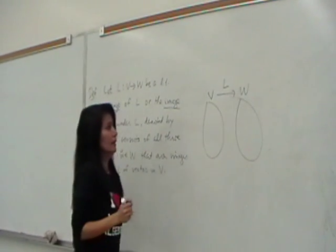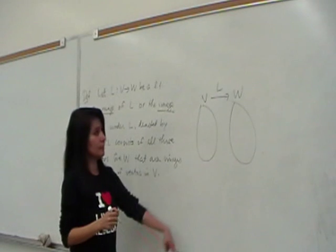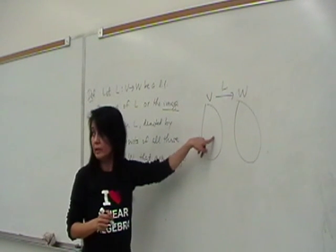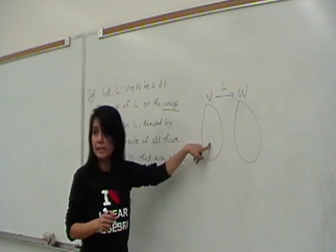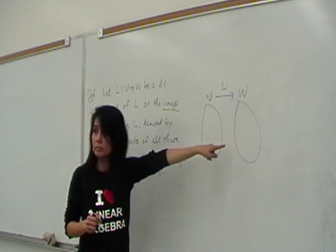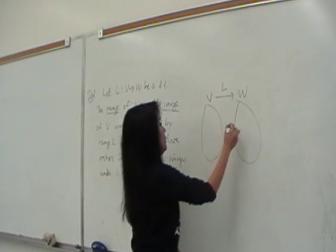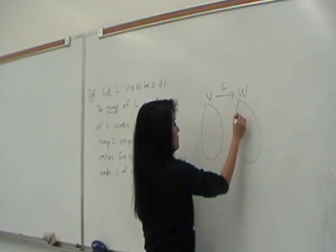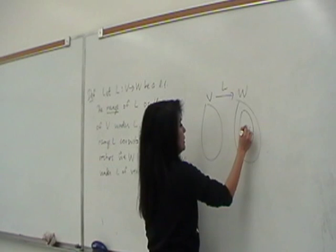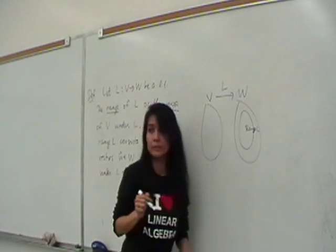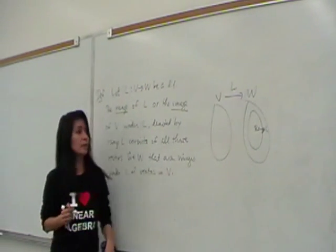And this is L. We said for a mapping, function mapping, we want all of V, right? But do we necessarily want all of W? It's a mapping into if you want onto, and that's the next thing we'll define. But in general, you just get a little piece of this that's the range of L. So let's look.